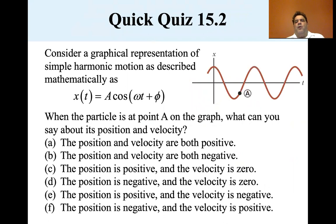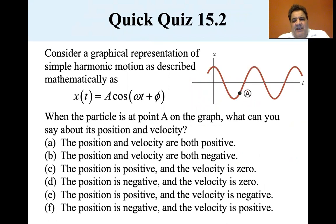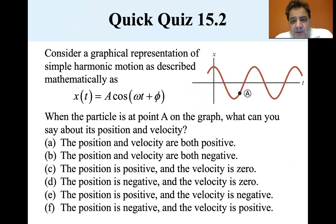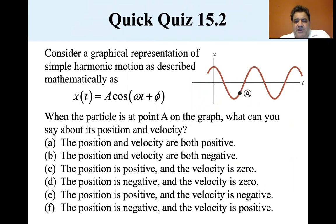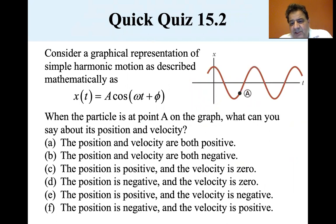When the particle is at point A on the graph, what can you say about its position and its velocity? Options: both positive; both negative; position positive and velocity zero; position negative and velocity zero; or position positive and velocity negative.